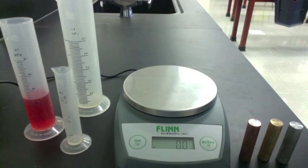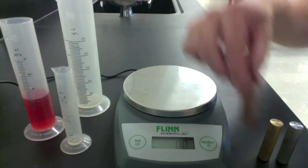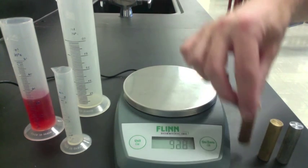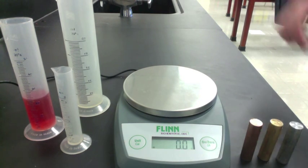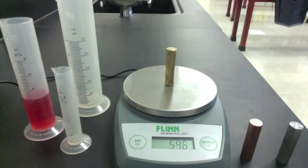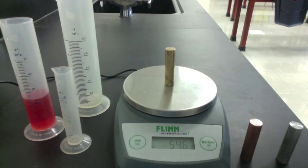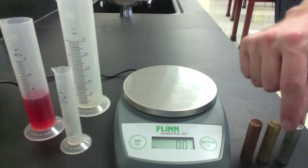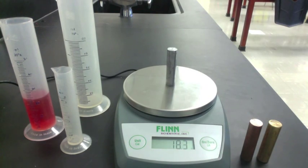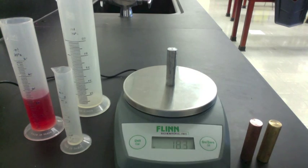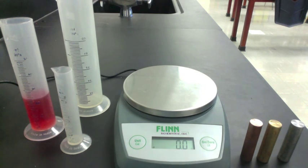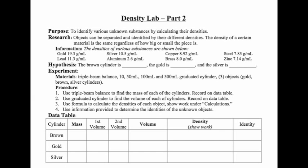But first, we have to get the mass using the scale. Here's the mass of the brown cylinder. Here's the mass of the gold cylinder. Here's the mass of the silver cylinder. Record those three masses on your data table — there's a column for mass. Be sure to write your unit: grams.